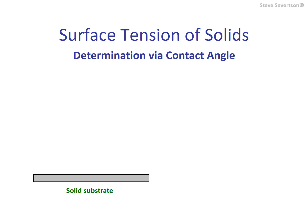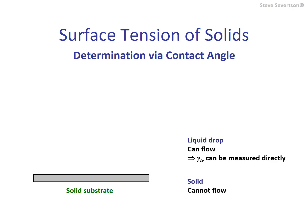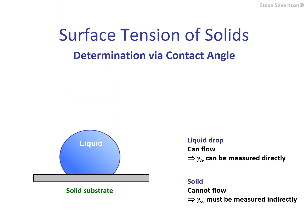As outlined above, the surface tension of a liquid and the interfacial tension between two liquids can be determined via techniques such as a Wilhelmy plate, du Noüy ring, corrected drop weight, and others. These techniques use the ability of liquids to flow and deform under stress to obtain the needed data. In the case of solid surfaces, this ability is absent, and values for surface energy must be obtained indirectly. A popular approach for doing this is through the use of contact angle measurements.